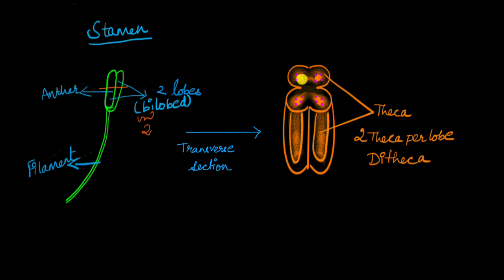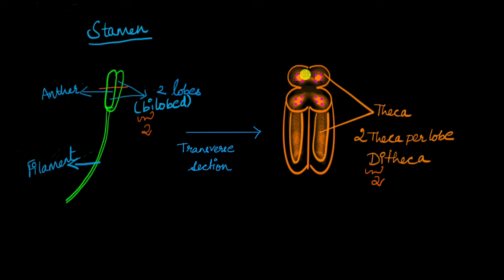Each lobe has two theca, and such anthers are also called dithecous anthers because di also means two. The dots visible here represent cells that will eventually undergo meiosis to produce pollen grains.